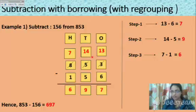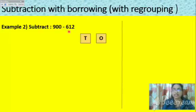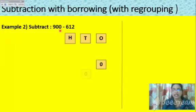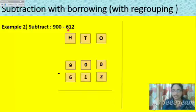Let us take the next example: subtract 900 minus 612. First arrange the places. Here the bigger number 900 is given first, so arrange it properly — 0 in the ones, 0 in the tens, and 9 in the hundreds place. Then the minus sign, and the smaller number 612: 2 in the ones place, 1 in the tens place, and 6 in the hundreds place.